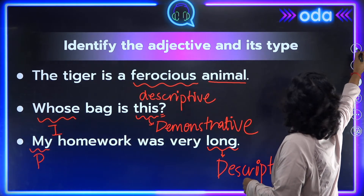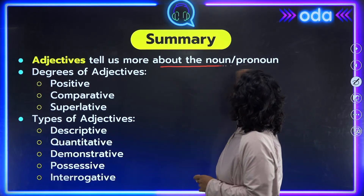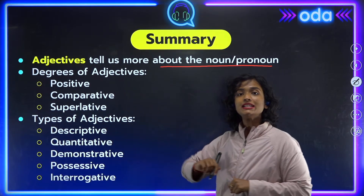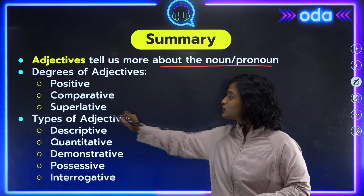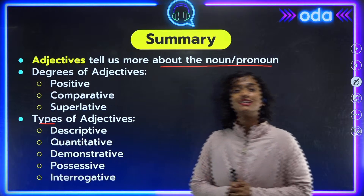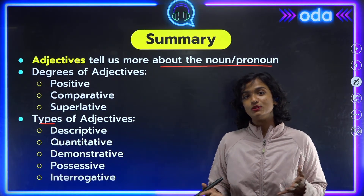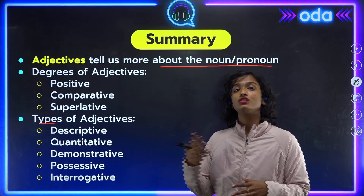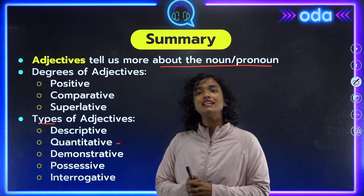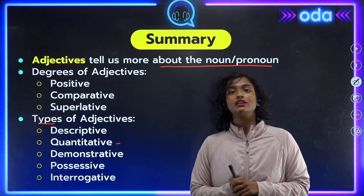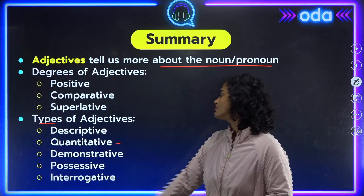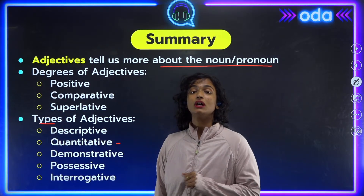Let's do a quick summary. Adjectives tell us more about the noun or pronoun. We covered three degrees: positive — no comparison; comparative — comparison between two nouns or pronouns; and superlative — comparison between more than two nouns or pronouns. For types: descriptive adds an attribute; quantitative tells us the quantity and answers 'how much' or 'how many'; demonstrative points out which thing; possessive signifies ownership; and interrogative words are used to ask questions.